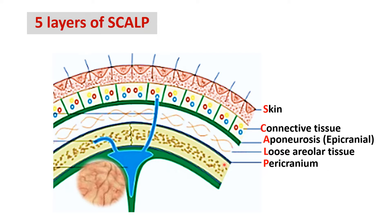Deep to the scalp we have the cranial bones, and after that we enter the cranial cavity where the brain is located and is covered by meninges. The outermost meninges is known as the dura mater, which has two layers — the outer layer lining the cranial bones is known as the endosteal layer, and the inner one is known as the meningeal layer. Here we can also see a venous channel — a dural venous sinus — located in the midline just next to the skull cap, which is the superior sagittal sinus.